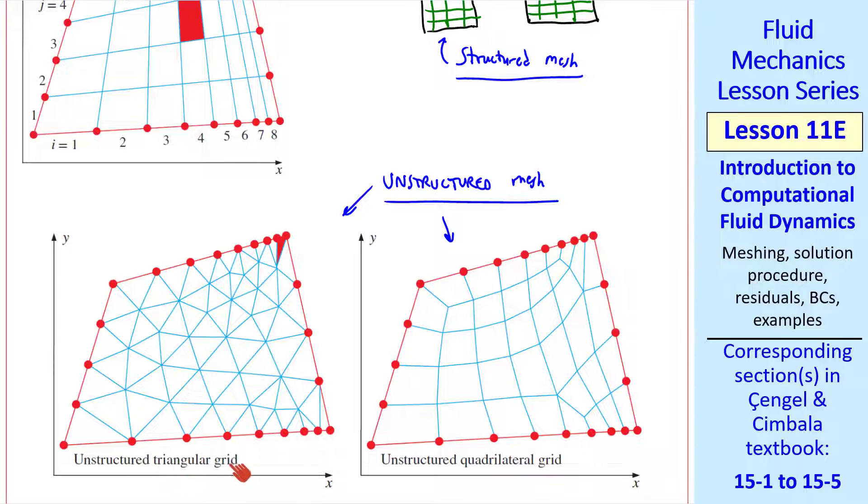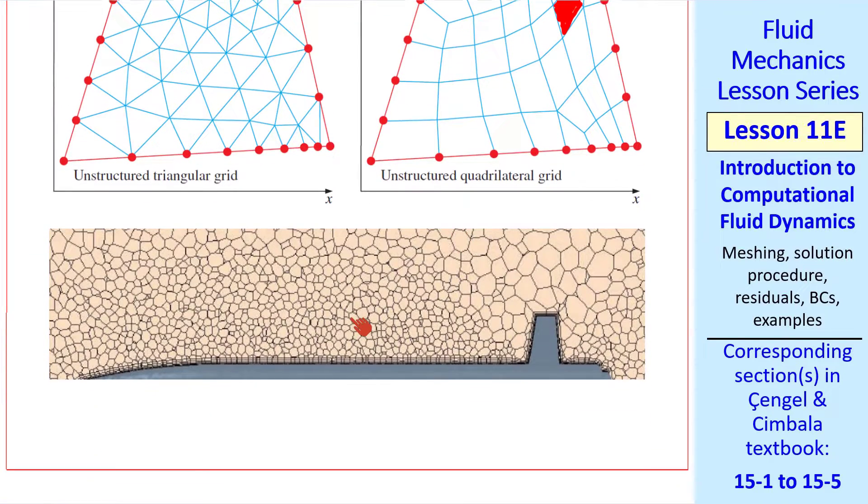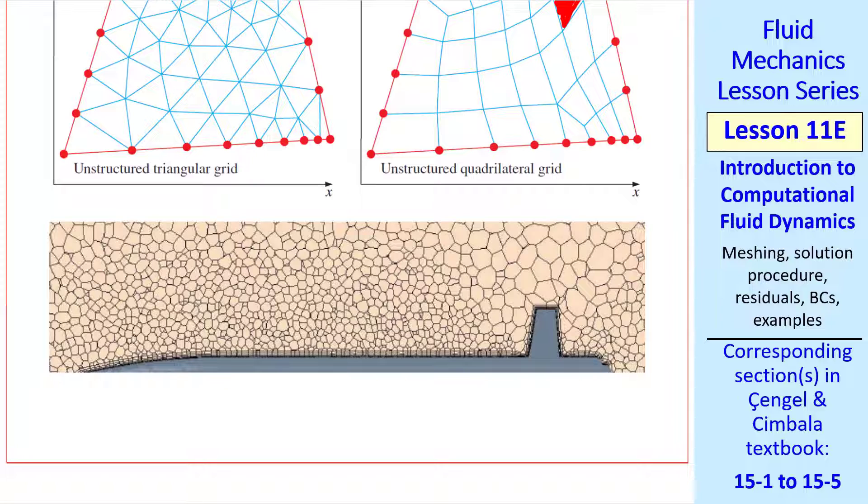This is an unstructured triangular grid, where some cell can be identified, but not with indices like we did here. You can also have an unstructured quadrilateral grid, where these cells are quadrilaterals, four-sided instead of three-sided. If we look at one of these cells, this is the fourth cell from here, but it's only the third cell to this row, so you cannot define the cell by indices. You can also have polygons in an unstructured mesh.